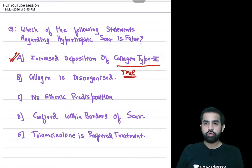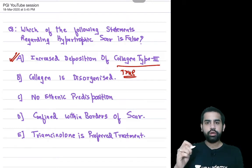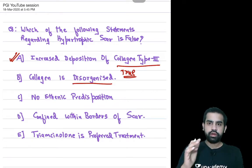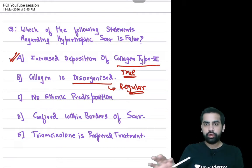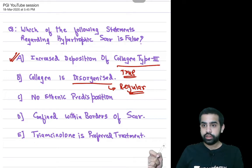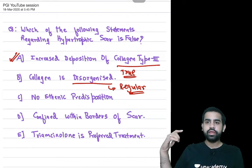What about collagen being disorganized — is that true or false? This is a very important difference between hypertrophic scar and keloid. In the hypertrophic scar, collagen is arranged in a regular, organized fashion. There is no disorganized pattern. But in a keloid, we get a disorganized pattern. So in hypertrophic scar we have regular arrangement of collagen, while in keloid we have a disorganized arrangement.